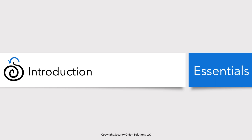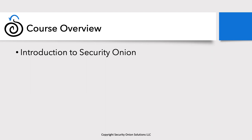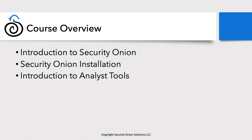This course gets you set up to start doing that with Security Onion, getting an essential understanding of Security Onion 2 and how it works. We're going to start with an introduction to the platform, then install Security Onion — downloading the ISO and running through Part 1 installing the operating system, and Part 2 the actual Security Onion setup. We'll then walk through the analyst tools and finish up with three common workflows.